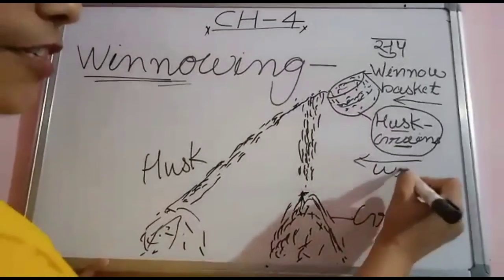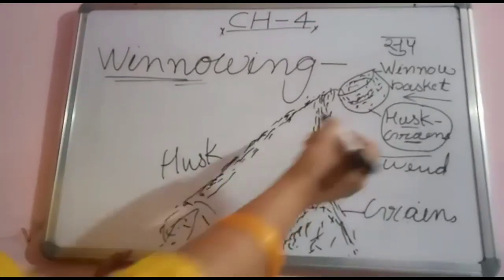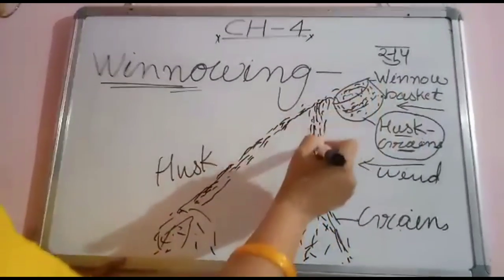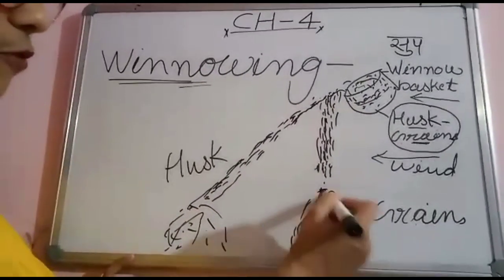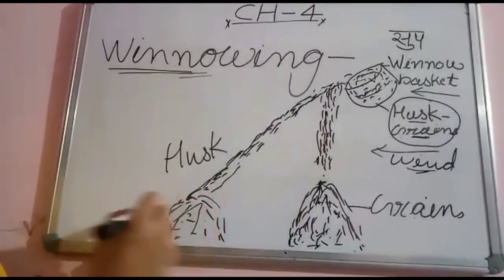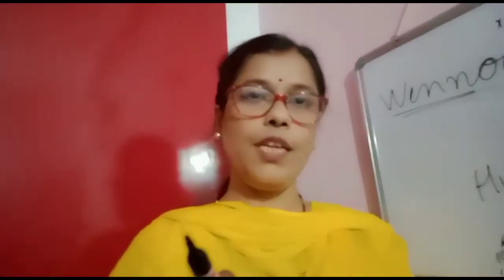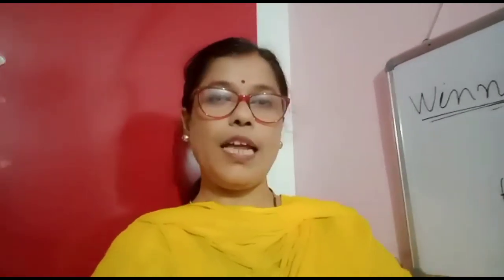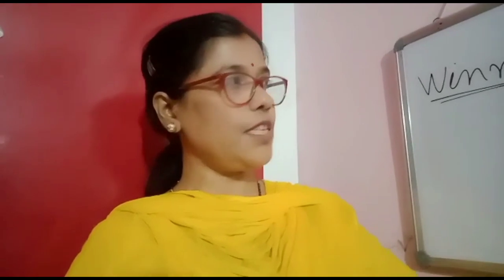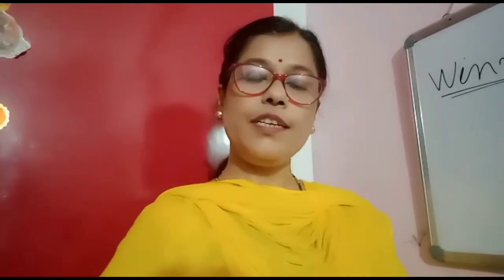Winnowing uses wind. Your mama also uses this winnow basket at home whenever husk is separated from grains. In summary: the mixture is allowed to fall from a height; the heavier grains fall vertically and form a heap; and the lighter husk is blown away by the wind and forms a heap of husk at a distance. The mixture is solid with solid — one component lighter, one heavier.